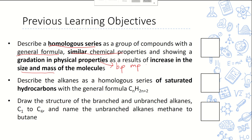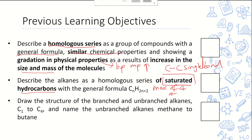Alkane is a series of saturated hydrocarbons. Saturated means they only have C-C single bonds, so each carbon is bonded to a maximum of four atoms. The general formula for alkane is CnH(2n+2). We covered methane all the way to butane.